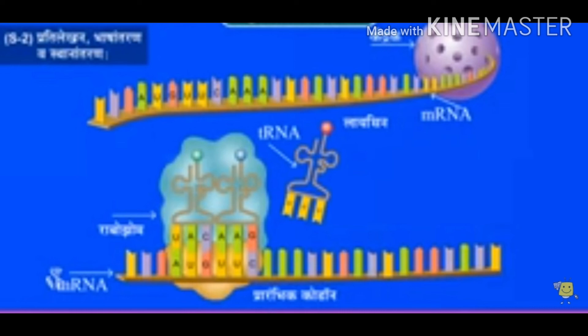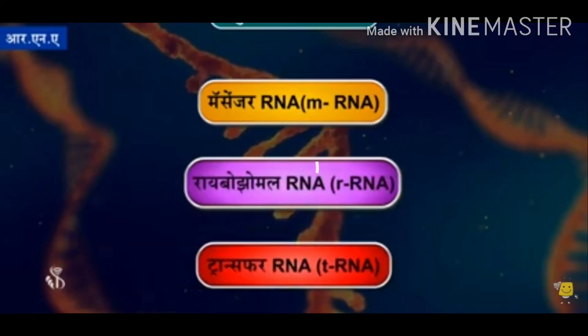The next term is mutation. Sometimes any nucleotide of the gene changes its position, causing a minor change — this is nothing but mutation. Some mutations may be minor but some may be considerable. There are three types of RNA: messenger RNA, ribosomal RNA, and transfer RNA.